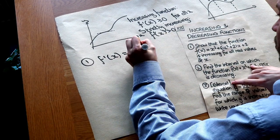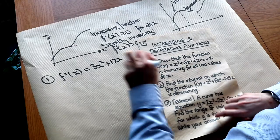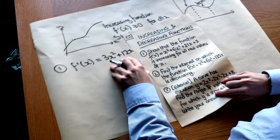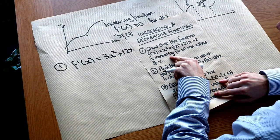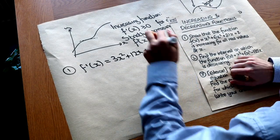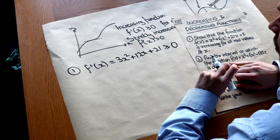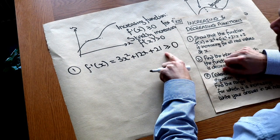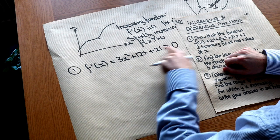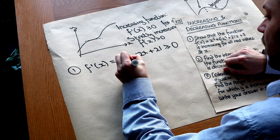6x² differentiates to 12x, and 21x differentiates to 21. We've got to show that this gradient function is greater than or equal to zero for all real values of x. Notice that all terms divide by 3, so we can divide both sides of the inequality by 3 to get a simpler inequality.